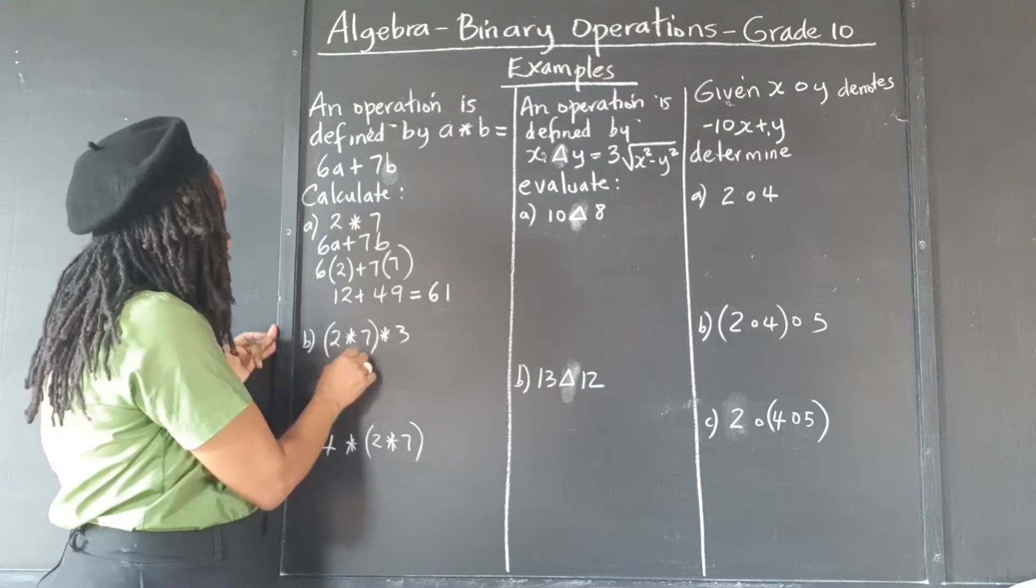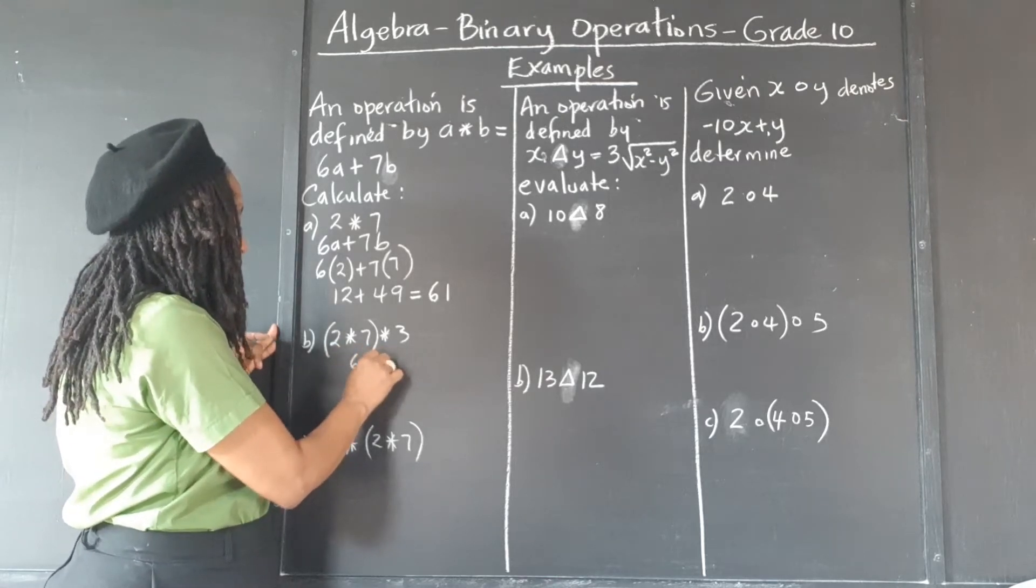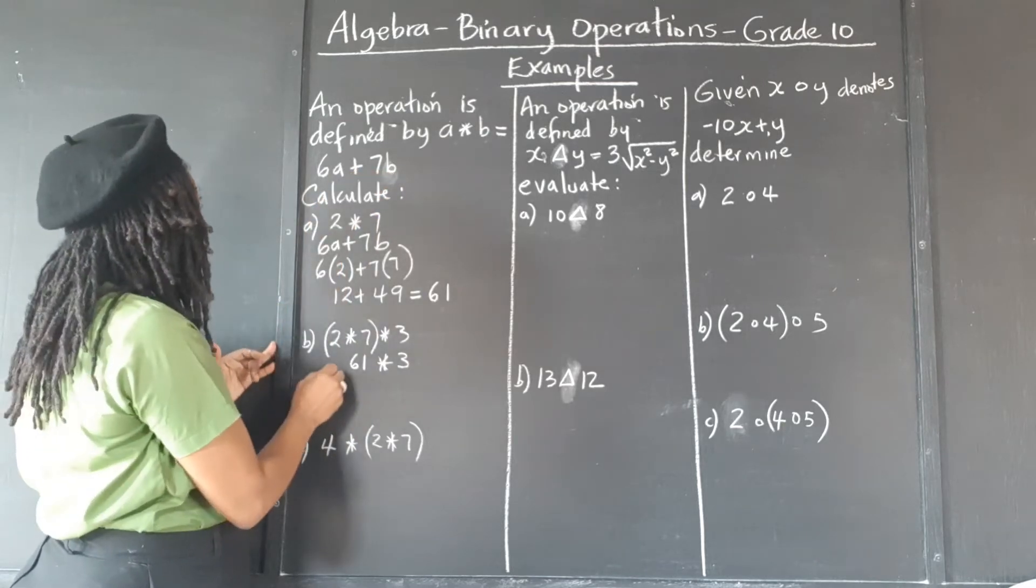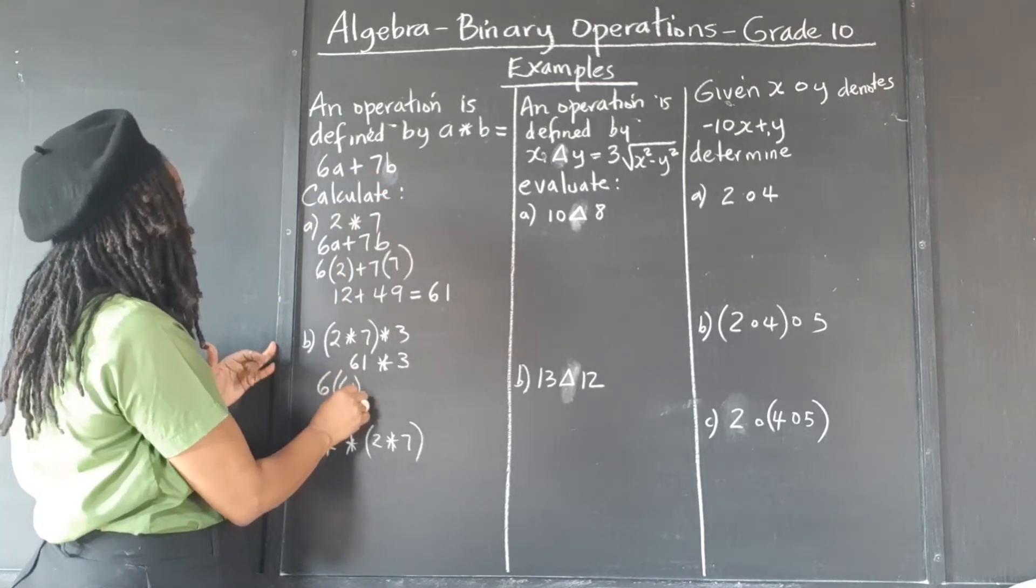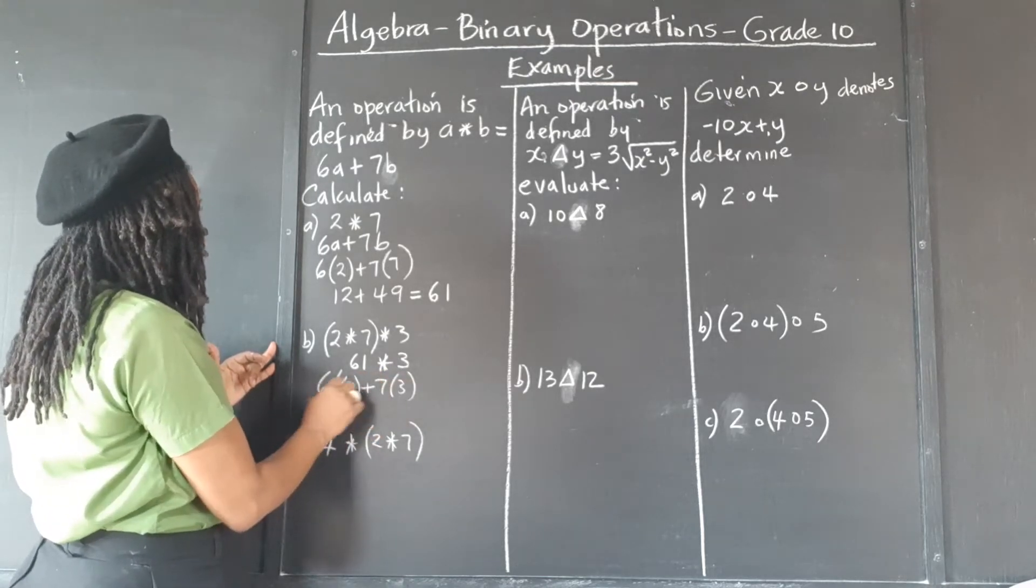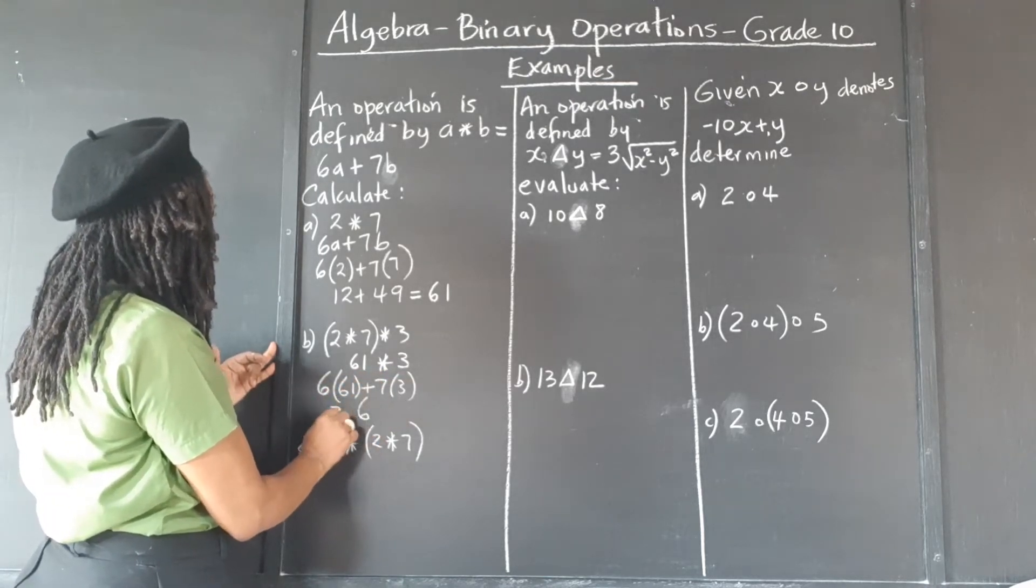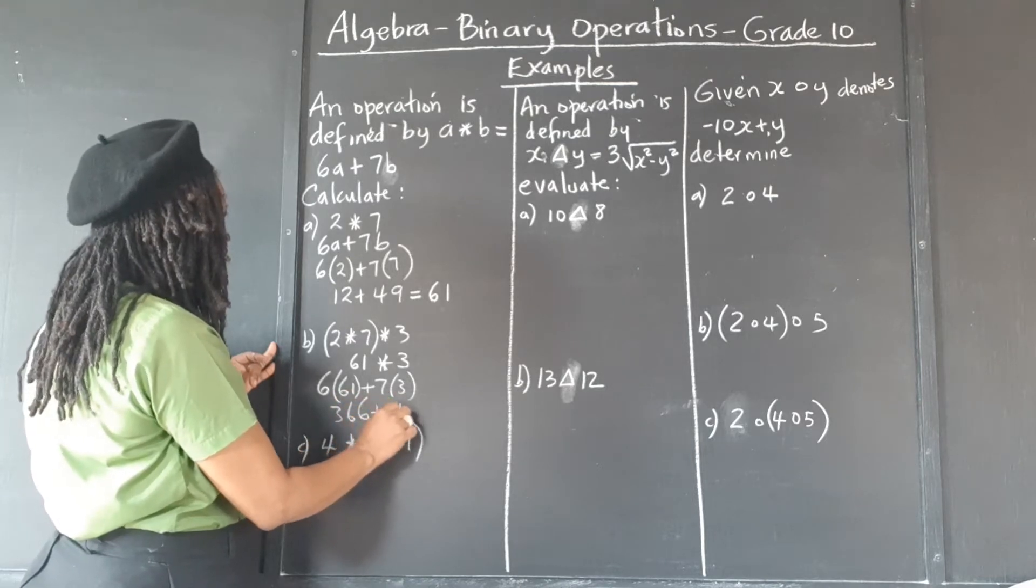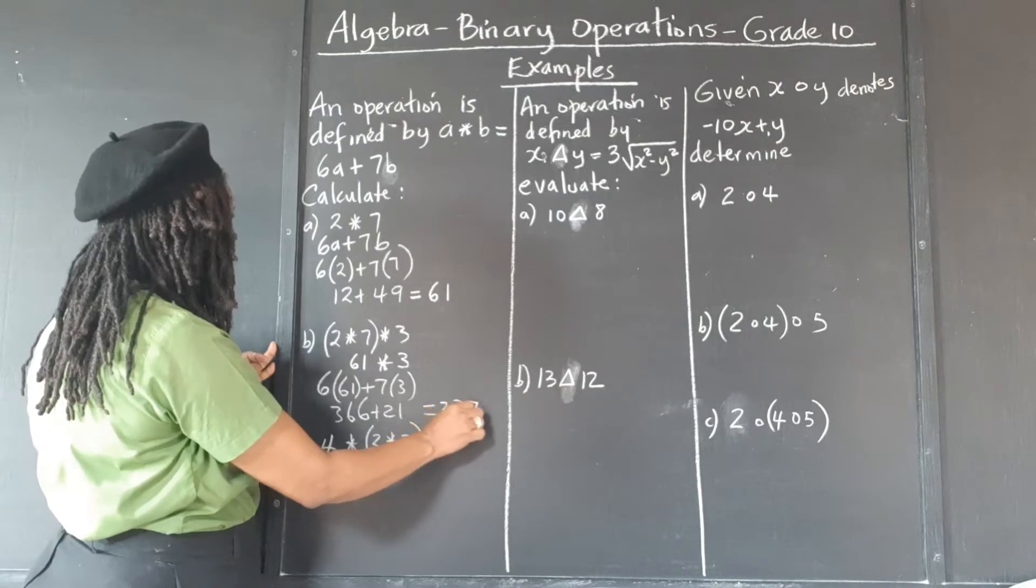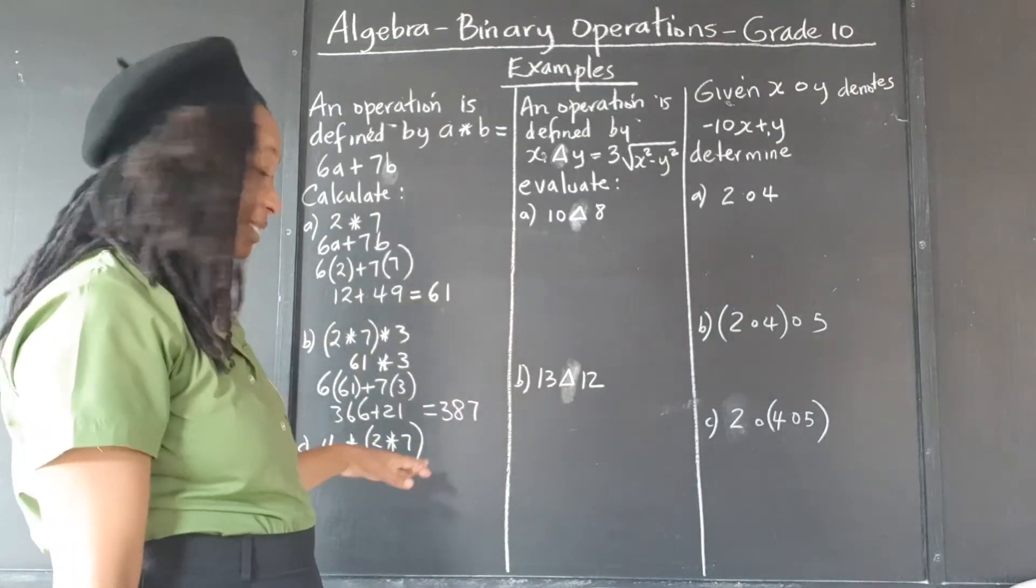So 61 is now a, and b is 3. We're going to plug that in here now. So 6 times 61 plus 7 times 3. 6 times 1 is 6, 6 times 6 is 36, 7 times 3 is 21, and that gives us 387.